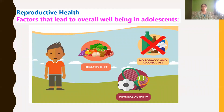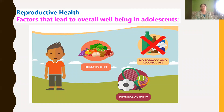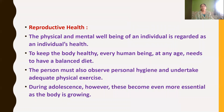Now let's discuss reproductive health. The factors that lead to overall well-being in adolescence include healthy diet, physical activity, personal hygiene, and no tobacco or alcohol use. Health is not only physical but also mental well-being.